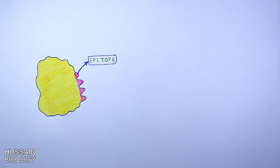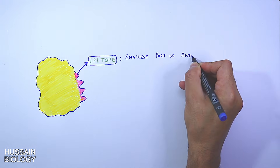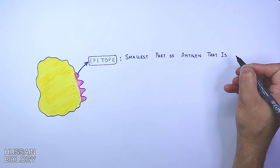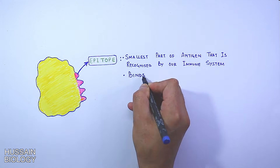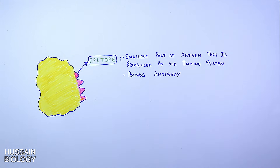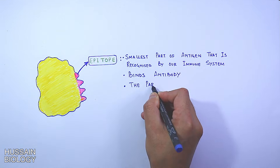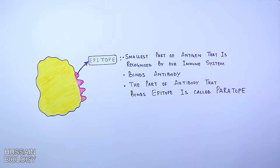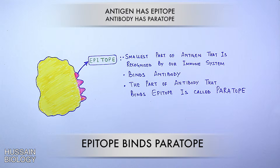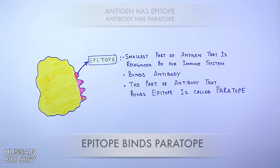The epitope is the smallest part of the antigen that is recognized by our immune system. The part of the antibody that binds the antigen epitope is called the paratope, and this paratope is specific for the antigen epitope.